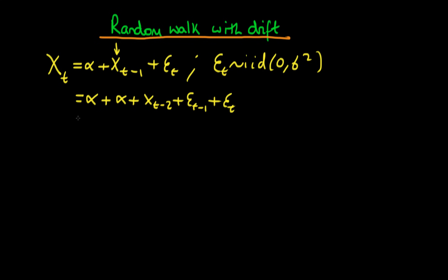And if we were to go again we could have that that would be equal to alpha plus alpha and then substituting in for xt minus 2 we would then from that term get another alpha plus xt minus 3 plus et minus 2 plus et minus 1 plus et.